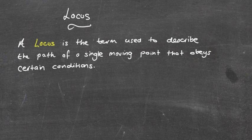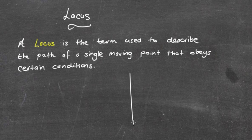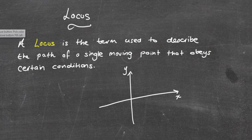Hey guys, welcome to today's lesson. We're going to be looking at the locus. The locus is the term used to describe the path of a single moving point that obeys certain conditions. Often when I look at locus I like looking at an x and y axis. Basically it's a point that moves in a particular path.